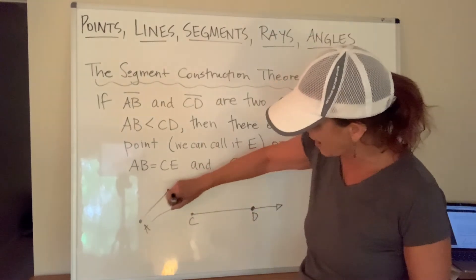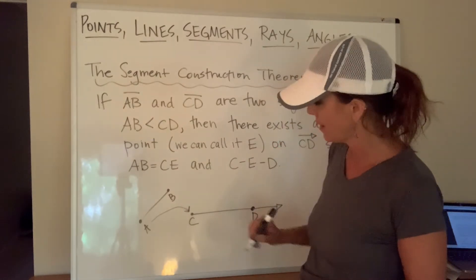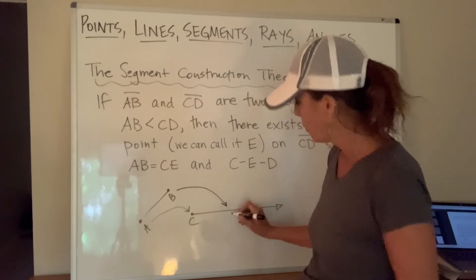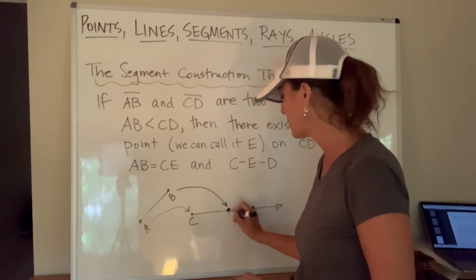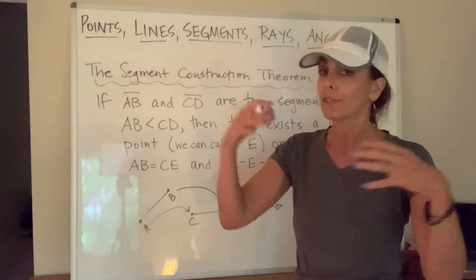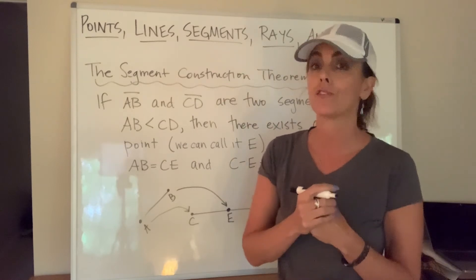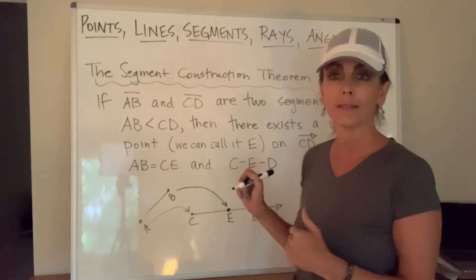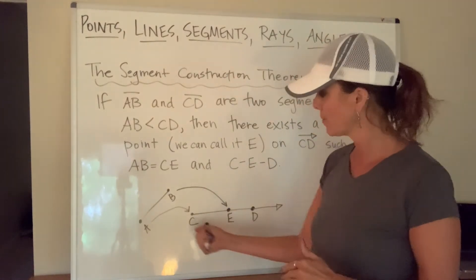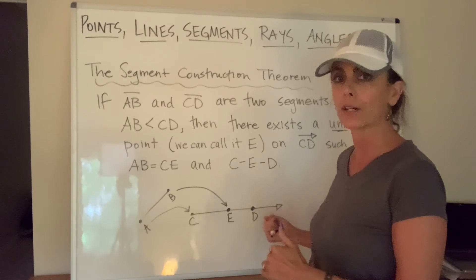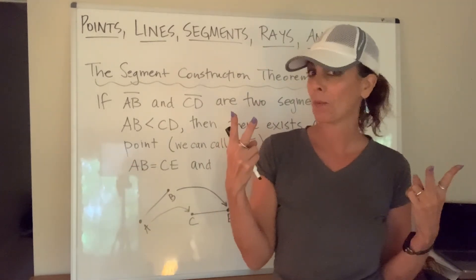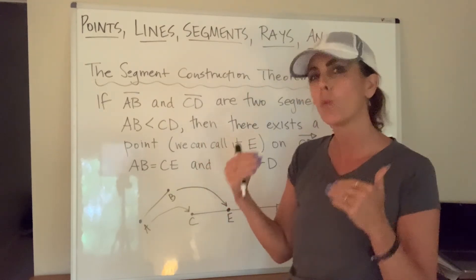Okay, so if I said that A is going to map to C and B is going to map to E, we would say that E is something like this. Okay, and there's going to be one of them. There's nowhere else that I can put it so that that is true, and the reason why we're using a ray is because we want to go in one direction, because if we went in the other direction, there would actually be two points that we could call E, so we're just going to limit it to one.